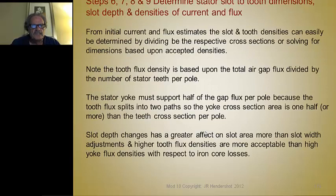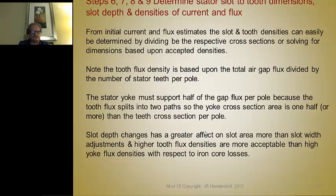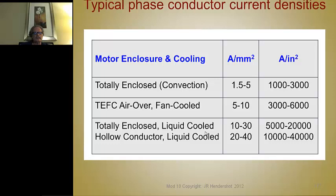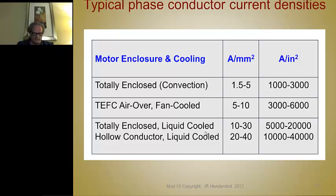These comments apply to all machine types discussed in these lectures. For steps six through nine, we determine the slot tooth dimensions — slot depth and the density of current and flux. This is simple arithmetic once you know the flux: divide the total lines of flux by the cross section to make the tooth and yoke dimensions thick enough for acceptable flux densities. For current densities, here are accepted practices for current densities in the conductors. If you have parallel paths, this assumes the current is split evenly, but forcing equal current sharing through parallel paths can be a serious problem.